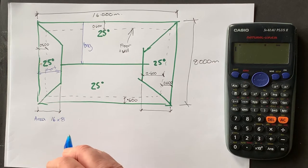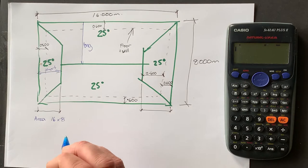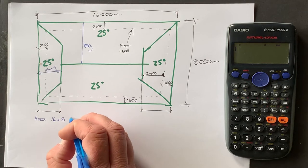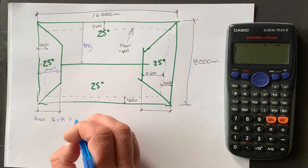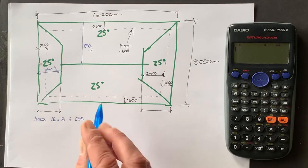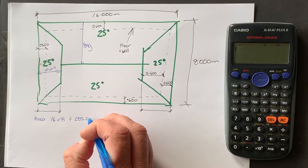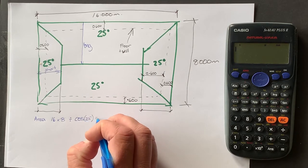Okay and then when we get that answer there, then we divide that by cosine of the pitch of the roof, 25 degrees. Put that in brackets in your calculator.